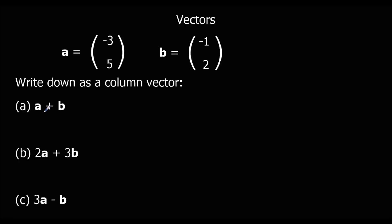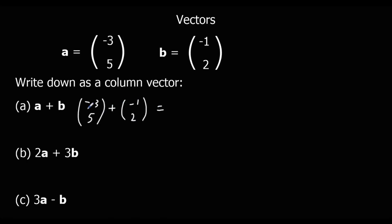Okay, the first one — a plus b — we're just going to add the top and add the bottom. Minus three plus minus one is minus four, and five plus two makes seven. So a plus b equals the column vector minus four, seven.